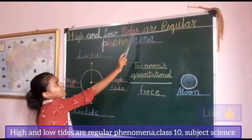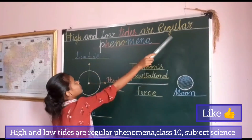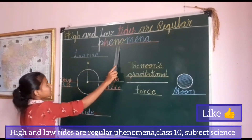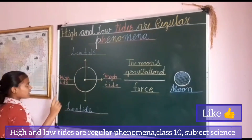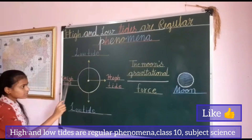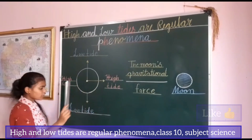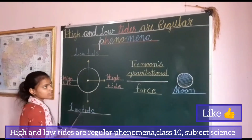High and low tides are regular phenomena. Low tide, high tide, high tide, low tide — these tidal changes occur in a predictable pattern.